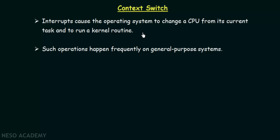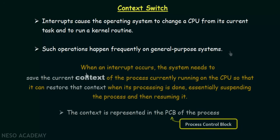When an interrupt occurs, the CPU has to be assigned to the process causing the interrupt so that it will be executed first. When that is completed, the CPU can be reassigned back to the process that was previously executing. The system needs to save the current context of the process currently running on the CPU so that it can restore that context when its processing is done, essentially suspending the process and then resuming it.